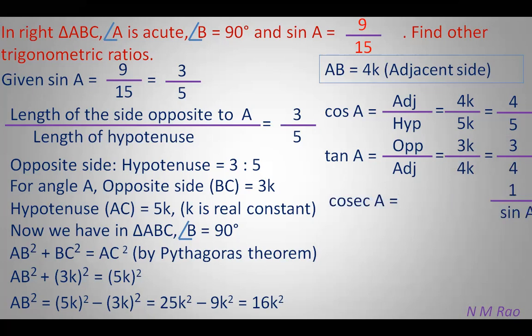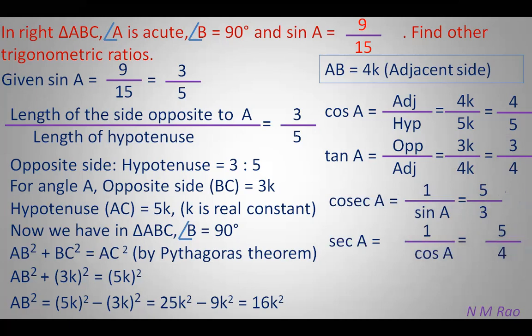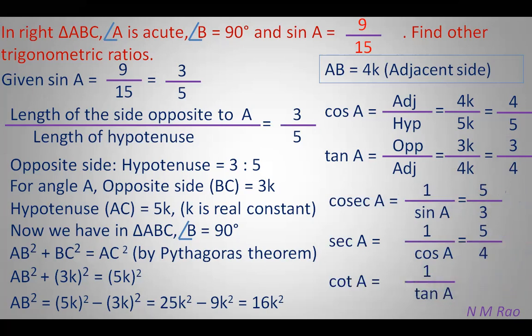Cosec A is the reciprocal of sin A. Since sin A is 3/5, cosec A is 5/3. Sec A is the reciprocal of cos A. Since cos A is 4/5, sec A is 5/4. Cot A is the reciprocal of tan A. Since tan A is 3/4, cot A is 4/3.